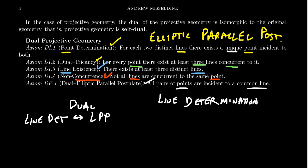This actually helps simplify proofs in projective geometry. Once you've proven one thing, you get its dual automatically. For example, if we prove there exists a set of four points no three of which are collinear, the dual — there exists a set of four lines no three of which are concurrent — is automatically true in projective geometry. Points and lines are these dual notions, and this is heavily studied in the literature.